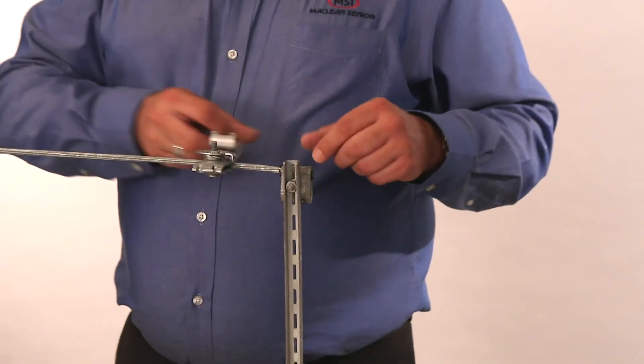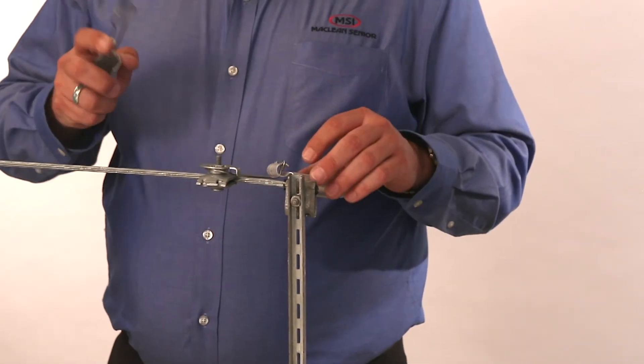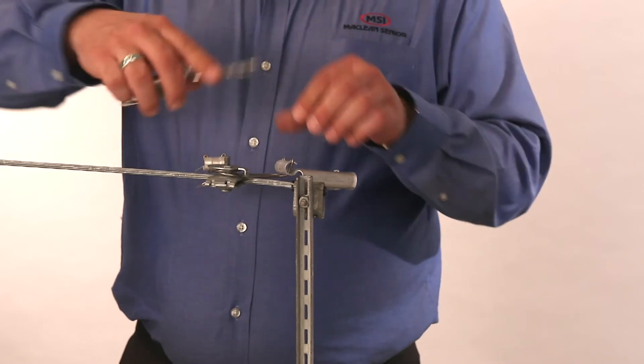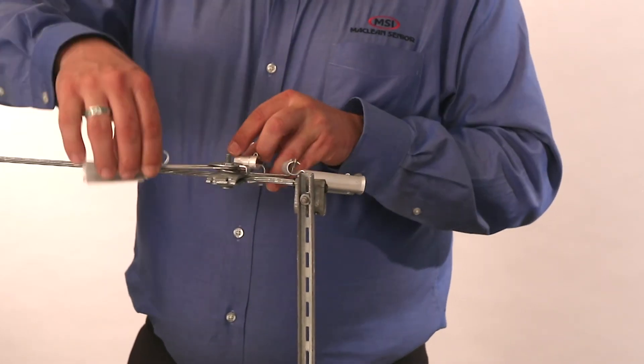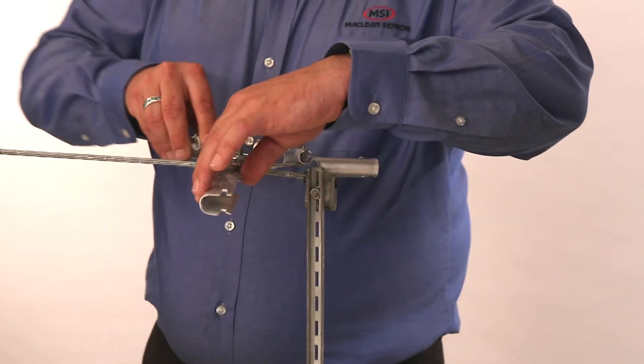You can load these clamps up. The reason they're called a multi-span clamp is because you can actually do multiple drop attachments off of the one multi-span. You can do up to four messenger drop clamps using the one attachment.